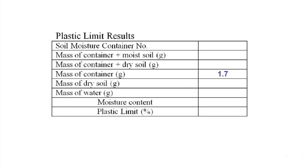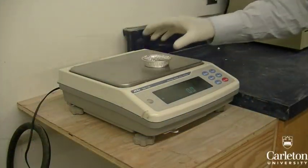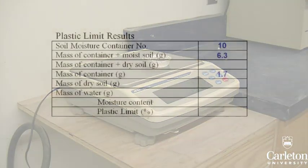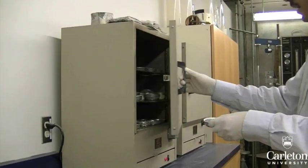Place a numbered moisture container on the scale and record its mass in a table. Record the number of the container you are using. Place the sample in the container and record the mass of the container plus the wet soil. Then place the container into an oven to dry.